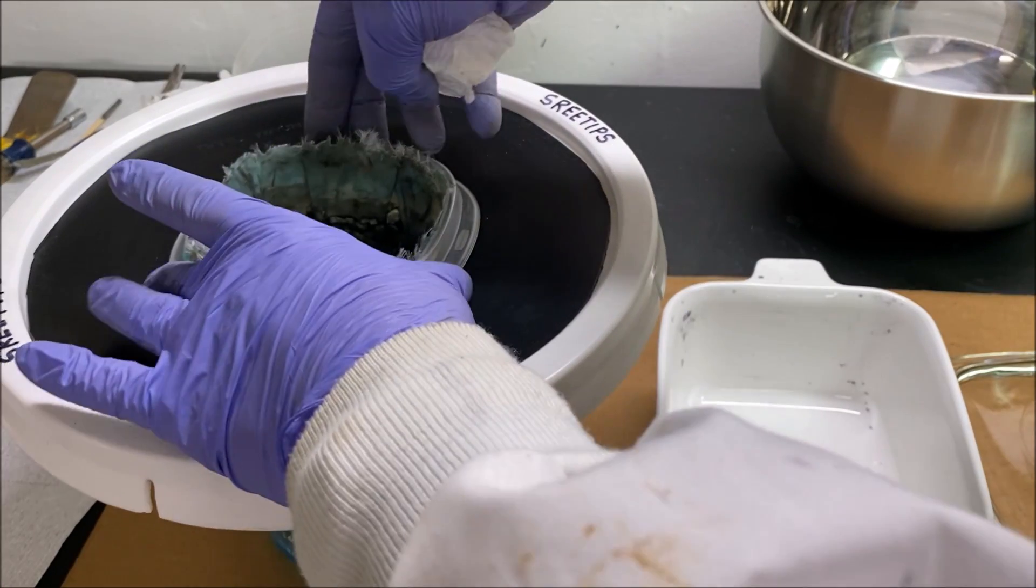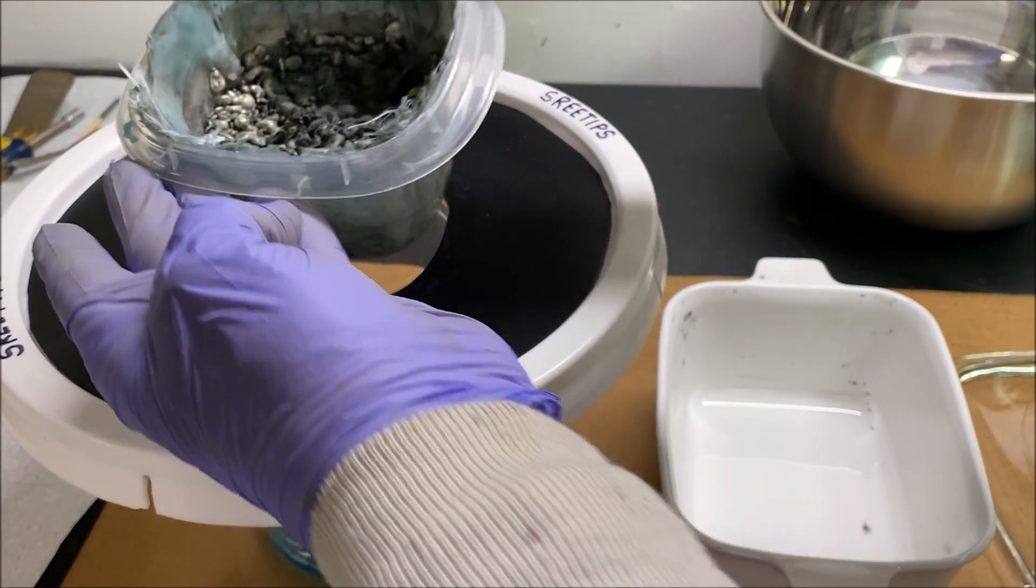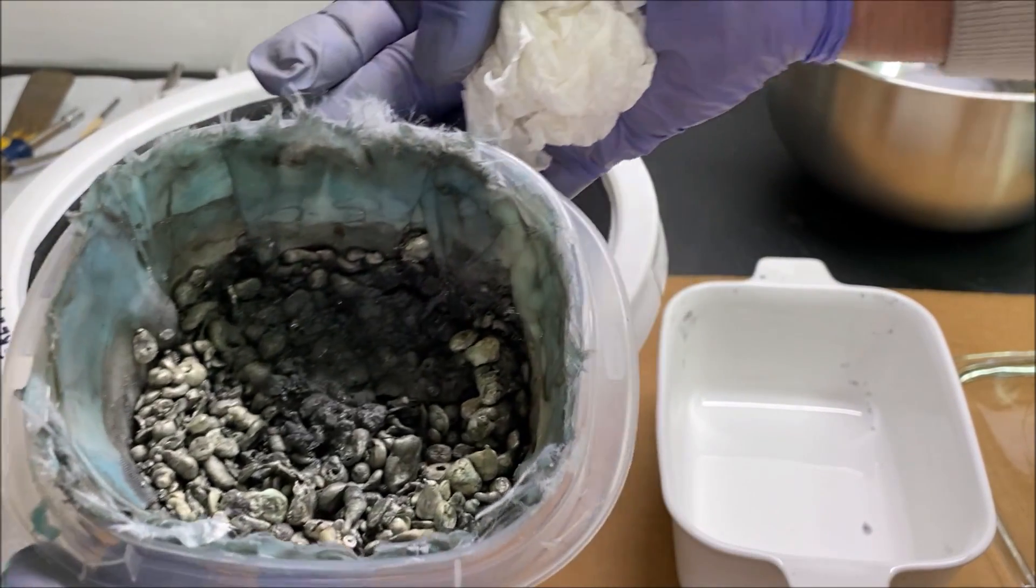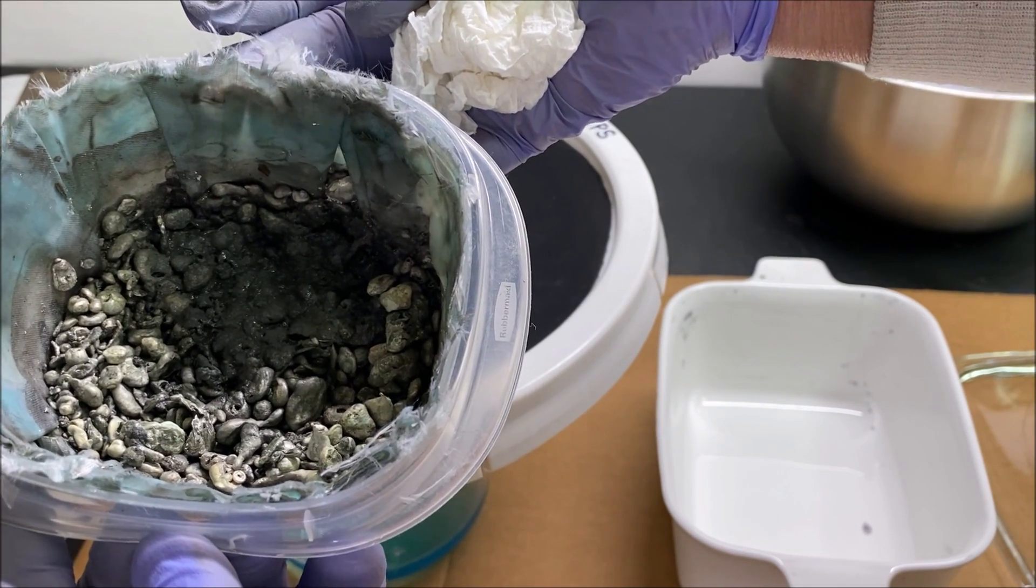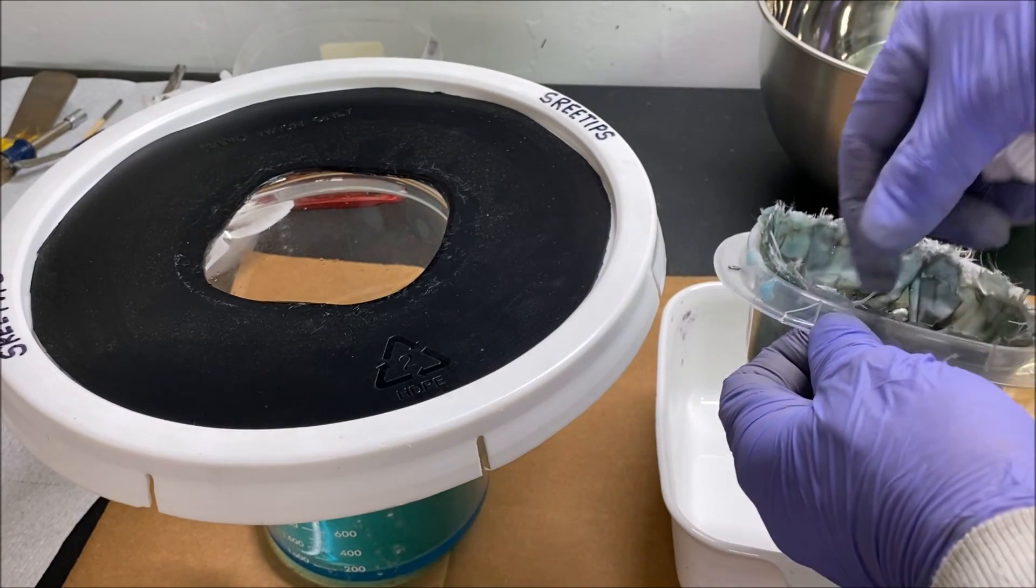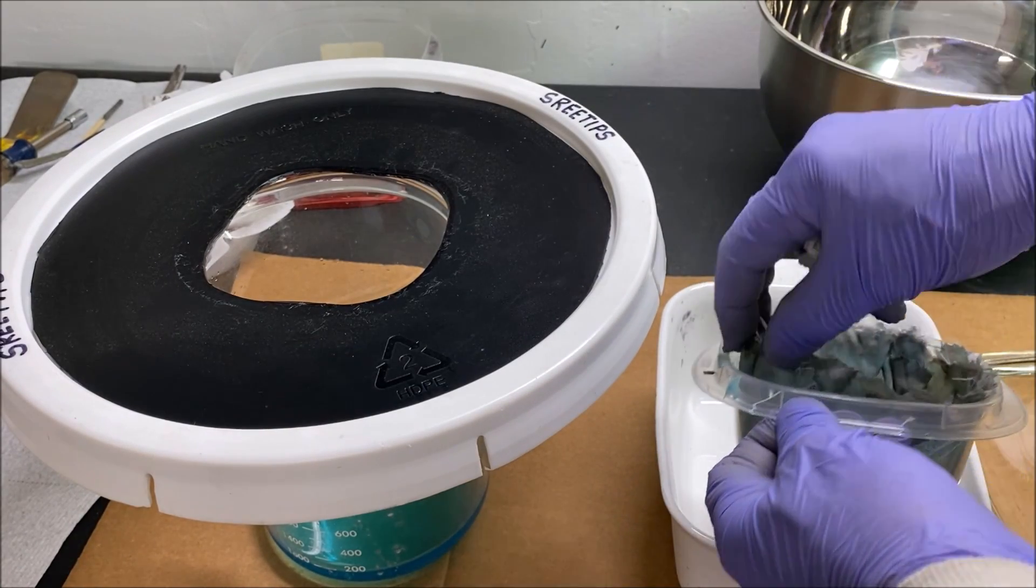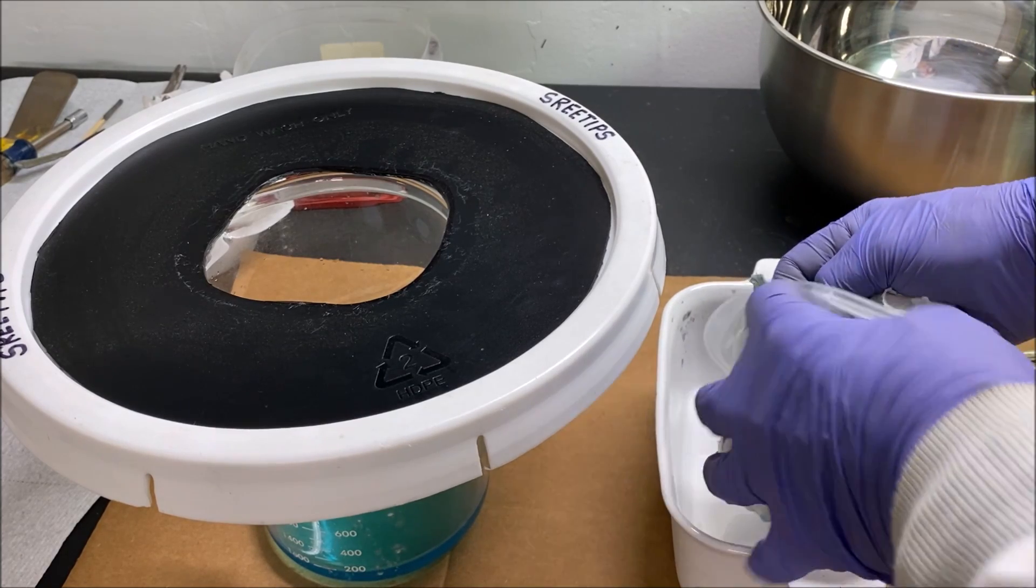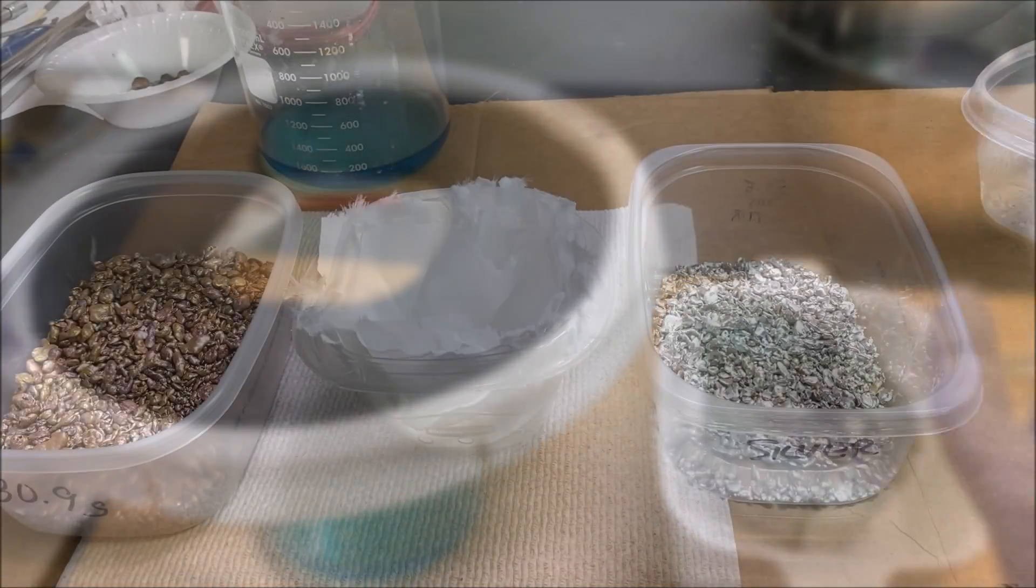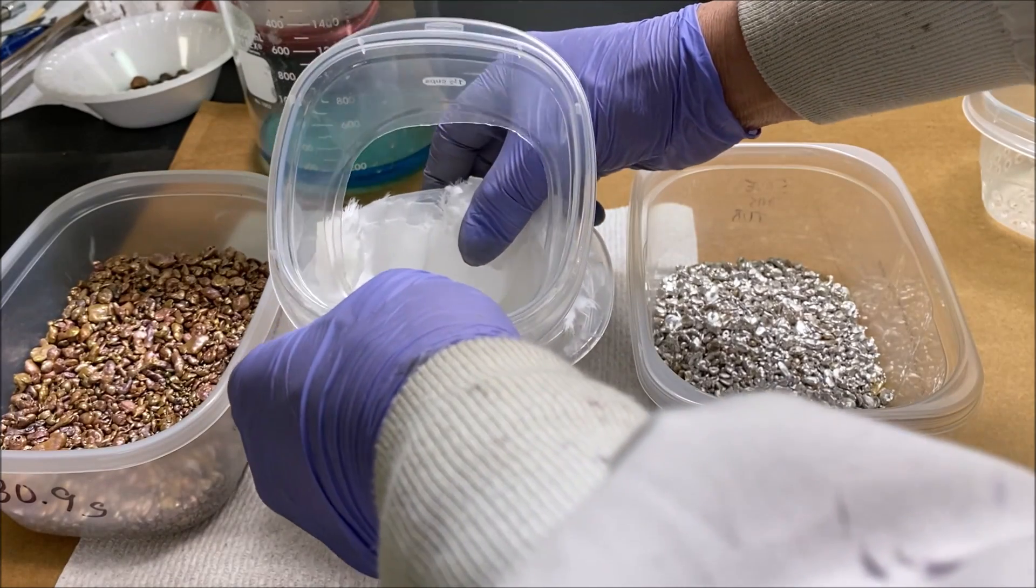What we're going to do is get this out of here now. I'll save this material, it's got a lot of silver in it as you can see, but it will probably also have some platinum group metals in it. So we'll save this filter and process it later on.